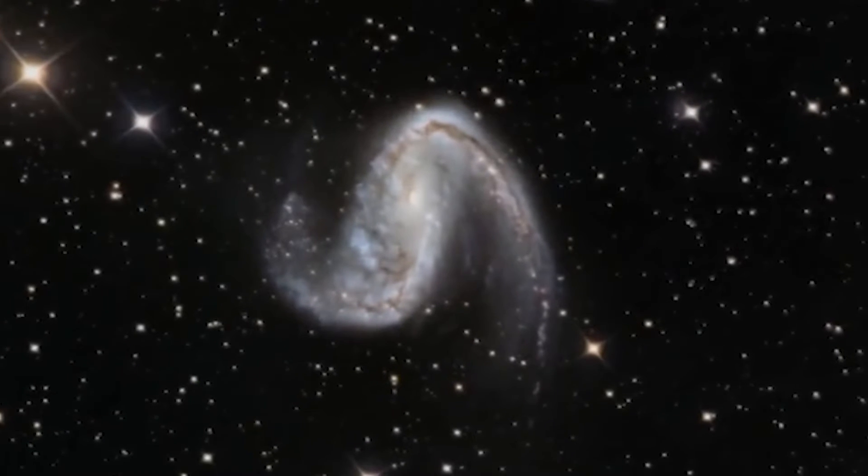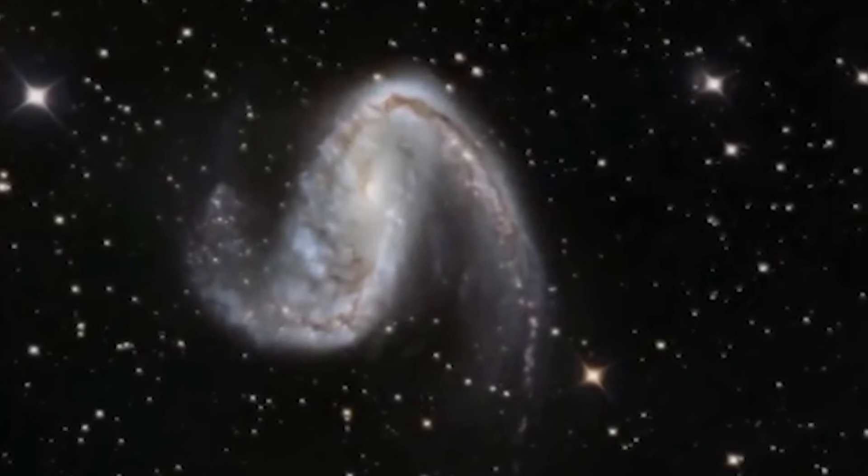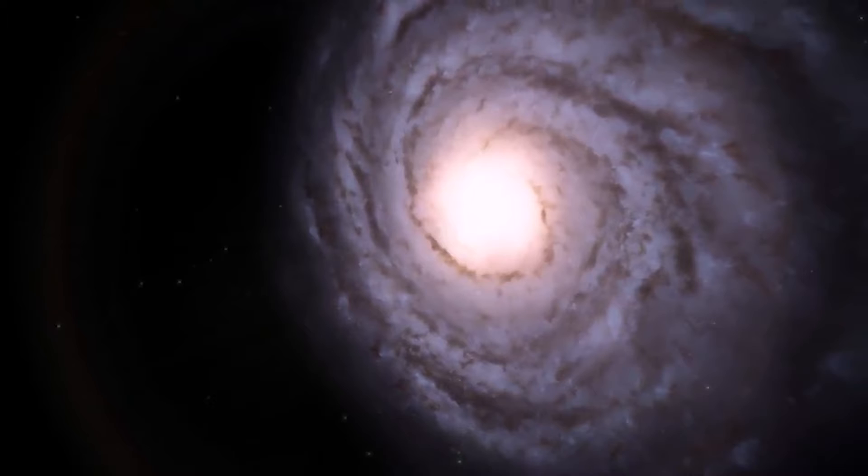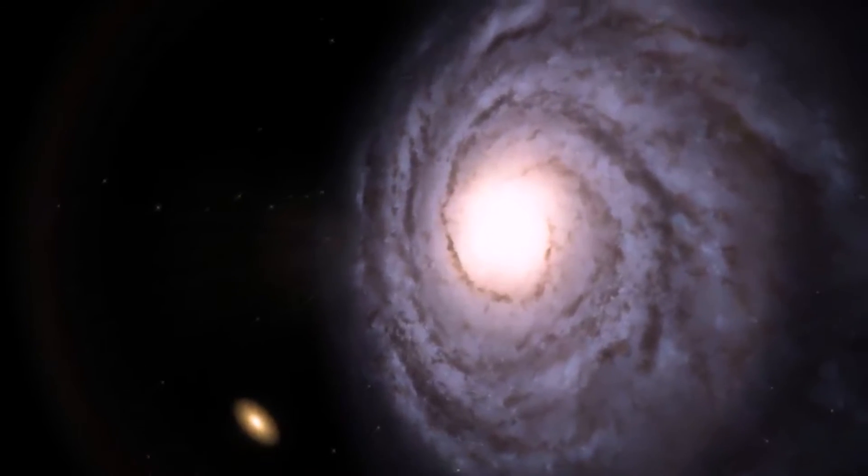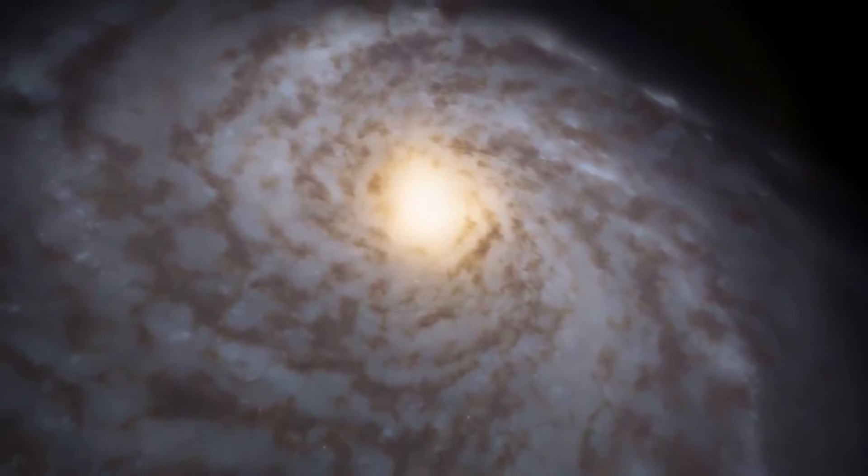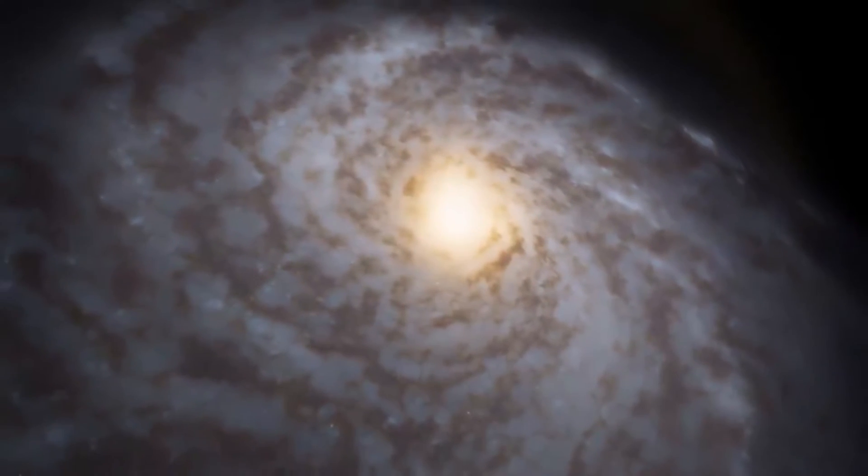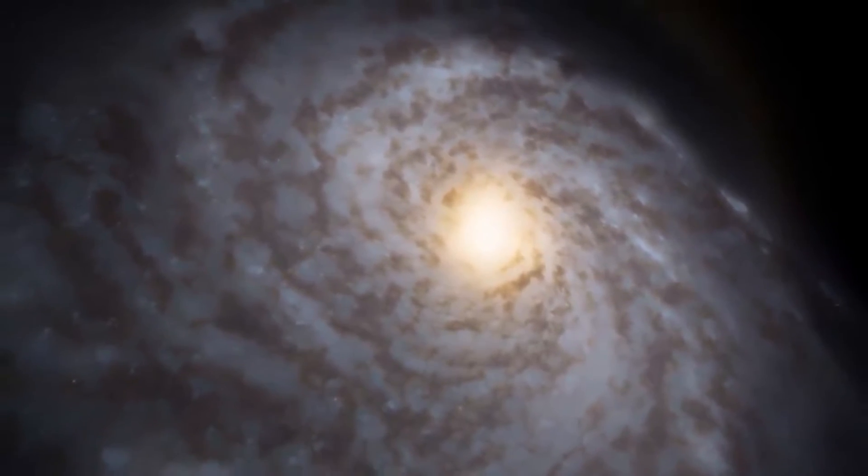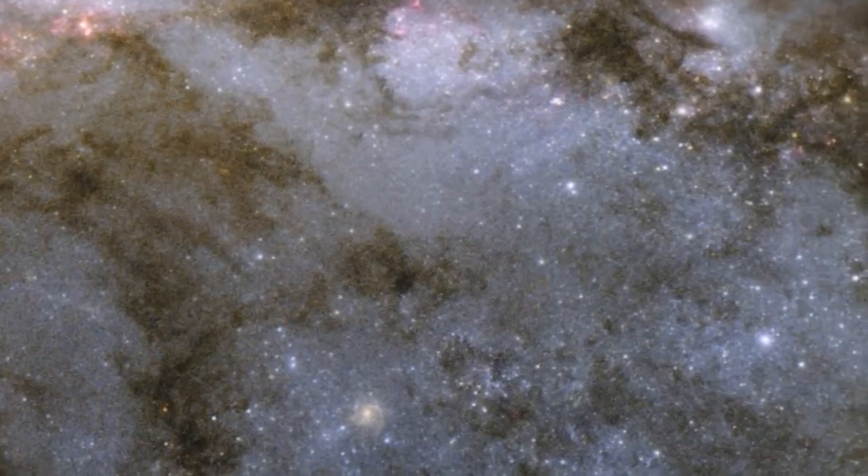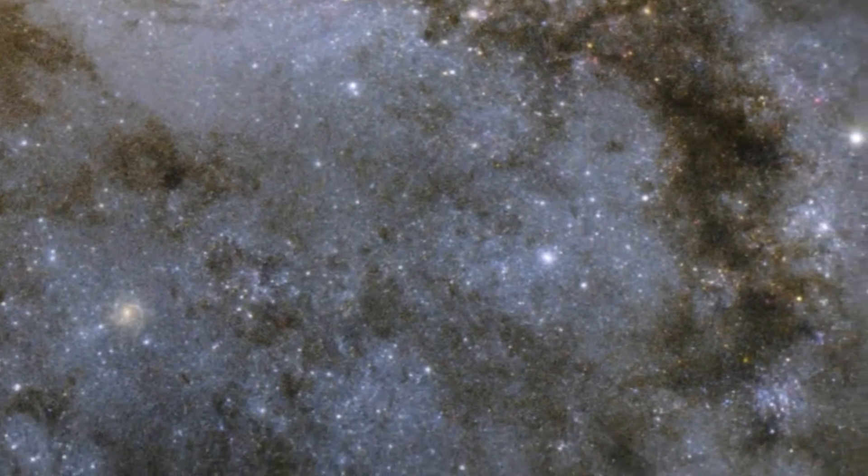Astronomers have named it the Meathook galaxy because the longer arm resembles a hook used to hang meat. The striking aspect of the images is the scattering of brilliant and beautiful stars throughout the galaxy, making it more dazzling. However, these stars are not part of the Meathook galaxy. We can only see them because we can't see clearly when we gaze into space.